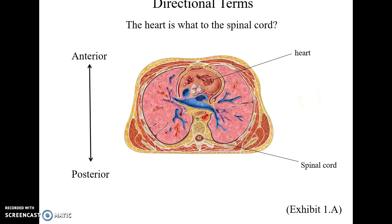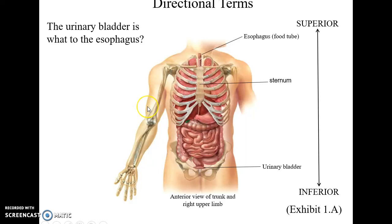Anterior means more toward the front of the body; posterior means more toward the back. For example, the heart is anterior to the spinal cord. Superior means closer to the head, and inferior means closer to the feet — so the urinary bladder is inferior to the esophagus.